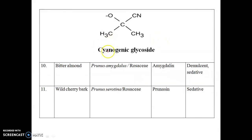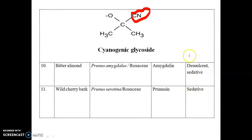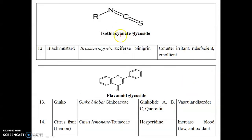Next are cyanogenic glycosides, which contain a cyano group. Bitter almond and wild cherry bark are classical examples. The cyanogenic glycoside in bitter almond is amygdalin, whereas in wild cherry bark it is prunasin. They are mainly used as sedatives. Isothiocyanate glycoside — Sinigrin from black mustard — was already mentioned.